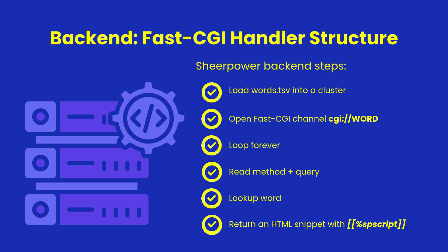Your backend program is simple and elegant. It loads the dictionary TSV file into a cluster once. Then it opens a FastCGI channel named 'cgi word' and enters its main event loop. Every time an htmx request arrives, Shear Power gathers the input variables, finds the word, and renders the result using a clean HTML template in a %spscript block. Fast. Direct. Maintainable.